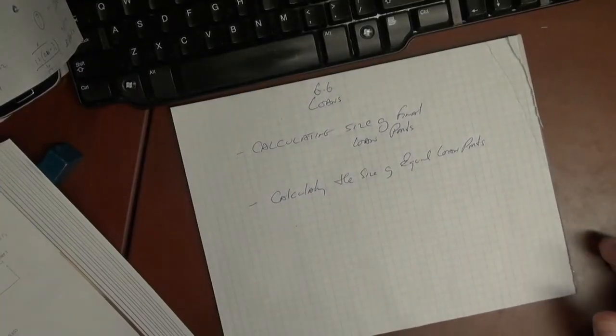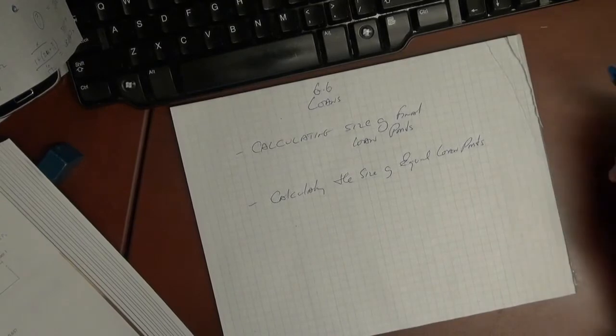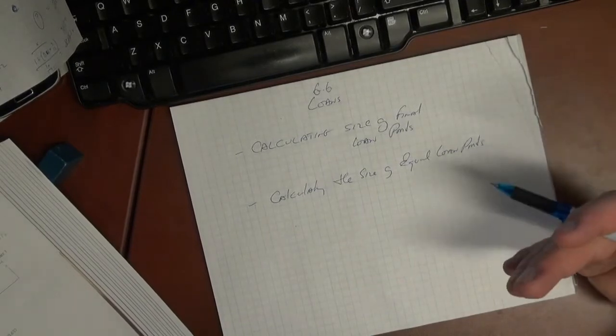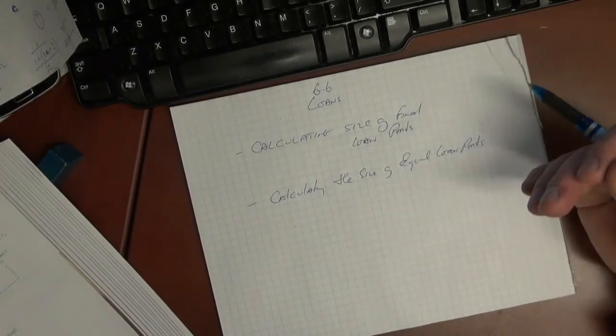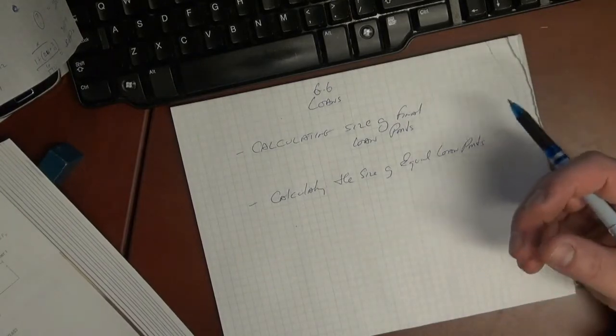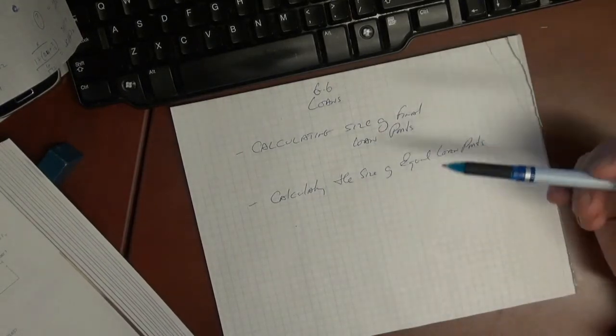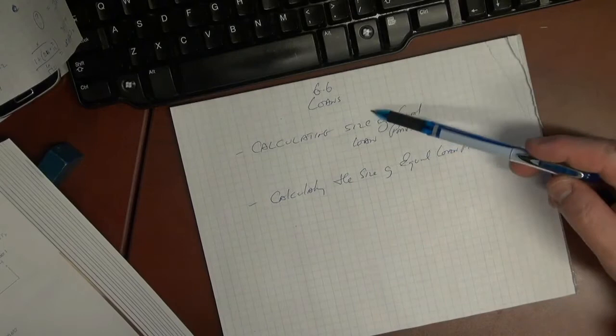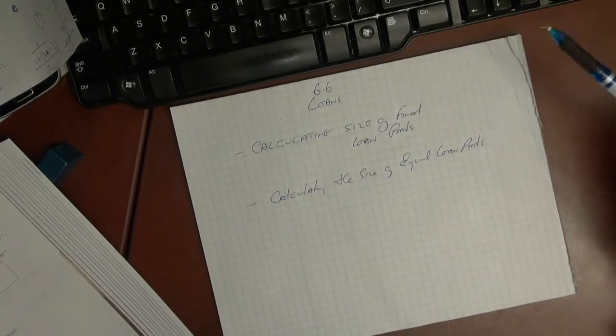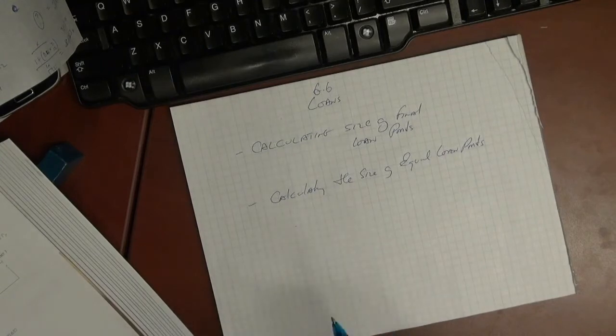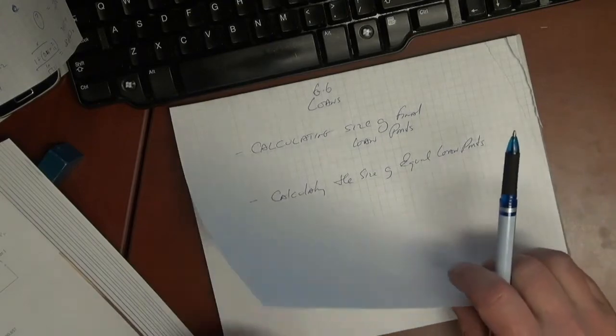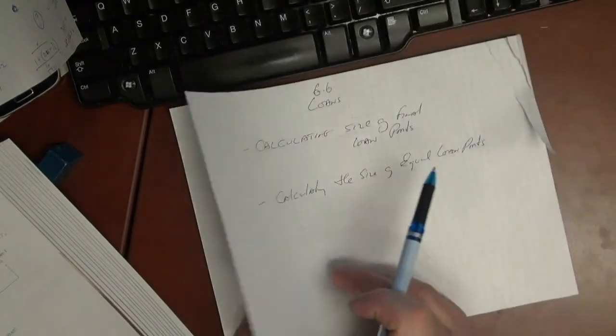Hello again everyone. This unit we're looking at exercise 66 on loans. When we do loan payments, we're using the tools that we've learned about so far - that is, future value, present value, these sorts of things. Essentially we're looking at a couple of issues here: how do we calculate the size of a final loan payment, and how do we calculate the size of equal loan payments. Using the tools we learned, we're going to apply this right now.